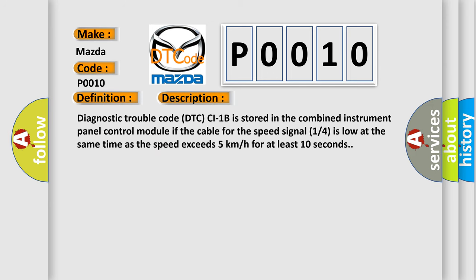Diagnostic trouble code DTC CI1B is stored in the combined instrument panel control module if the cable for the speed signal 1/4 is low at the same time as the speed exceeds 5 km per hour for at least 10 seconds.